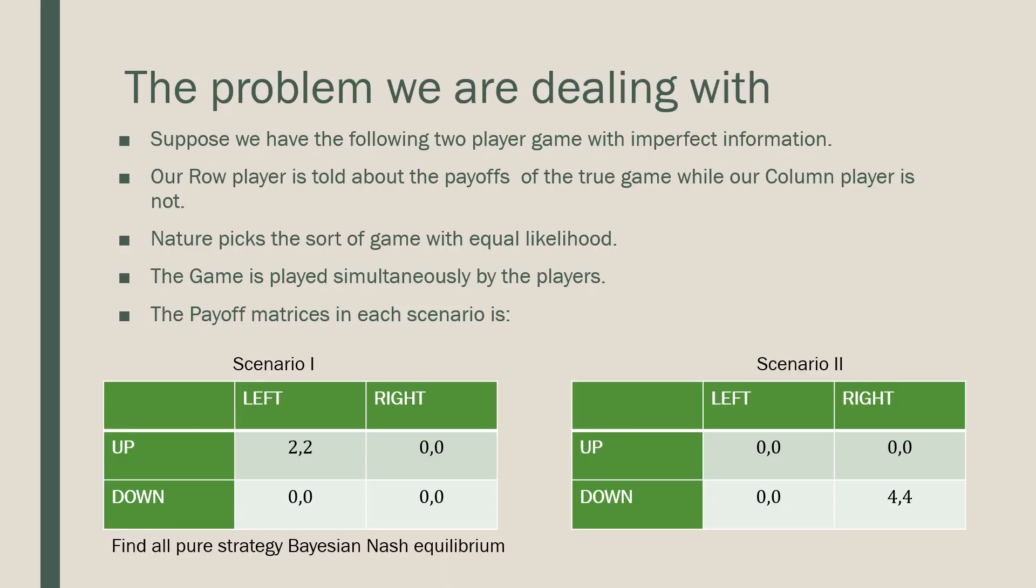So this is the problem that we're dealing with. Suppose we have the following two-player game with imperfect information. Our row player is told about the payoffs of the true game while our column player is not. He's kept in the dark. Nature picks the sort of game with equal likelihood and the game is played simultaneously by the players.